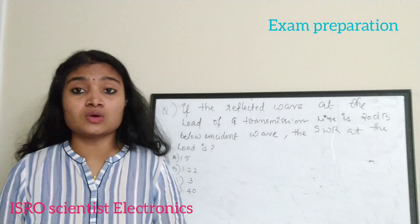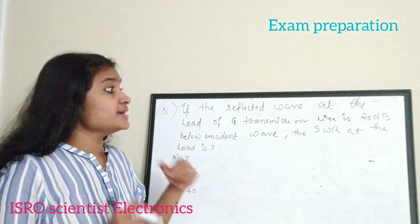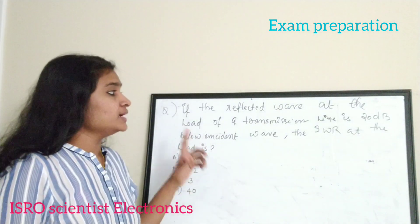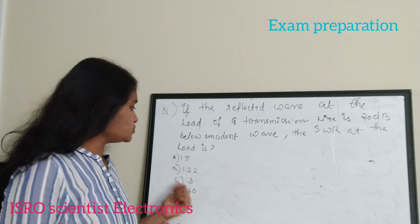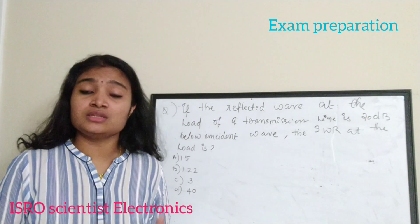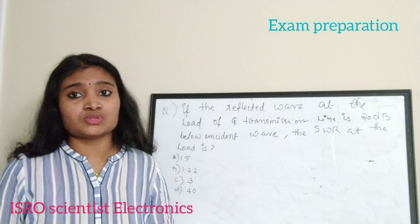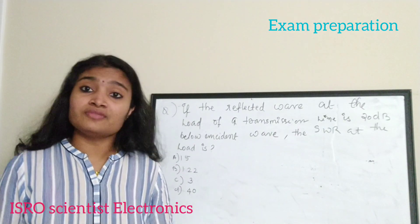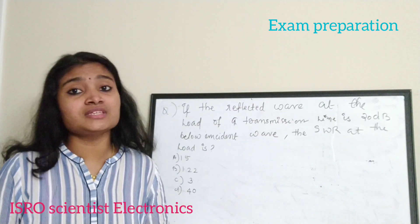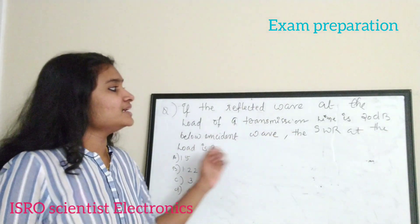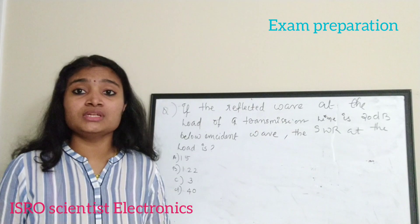The next question is from electromagnetic theory. The question is: if the reflected wave at the load of a transmission line is 20 dB below the incident wave, the SWR at the load is what? Options: a) 1.5, b) 1.22, c) 3, d) 40. To answer this you need an understanding of voltage standing wave ratio.